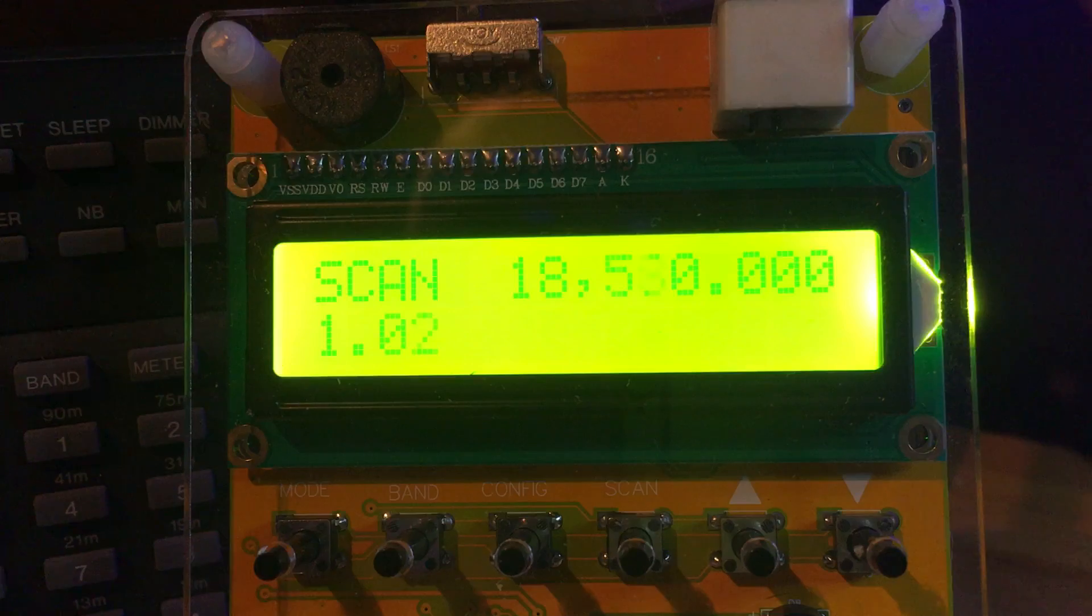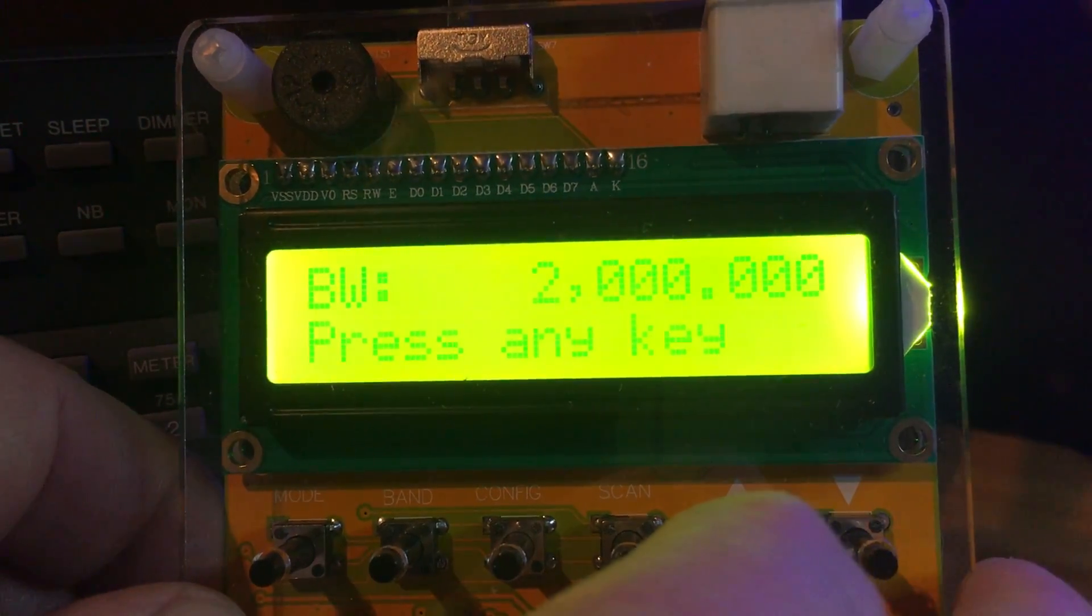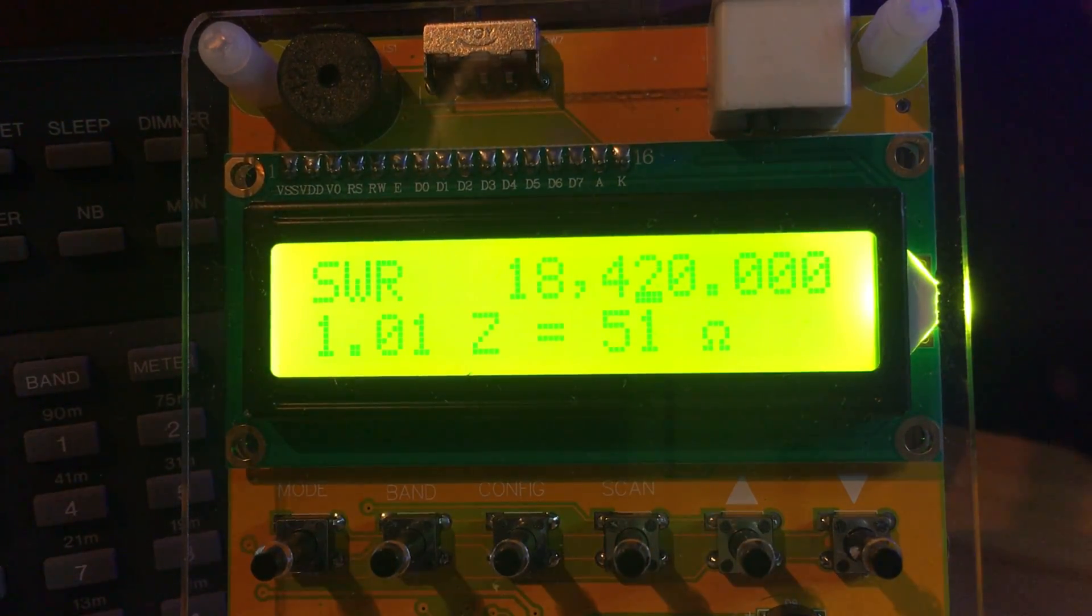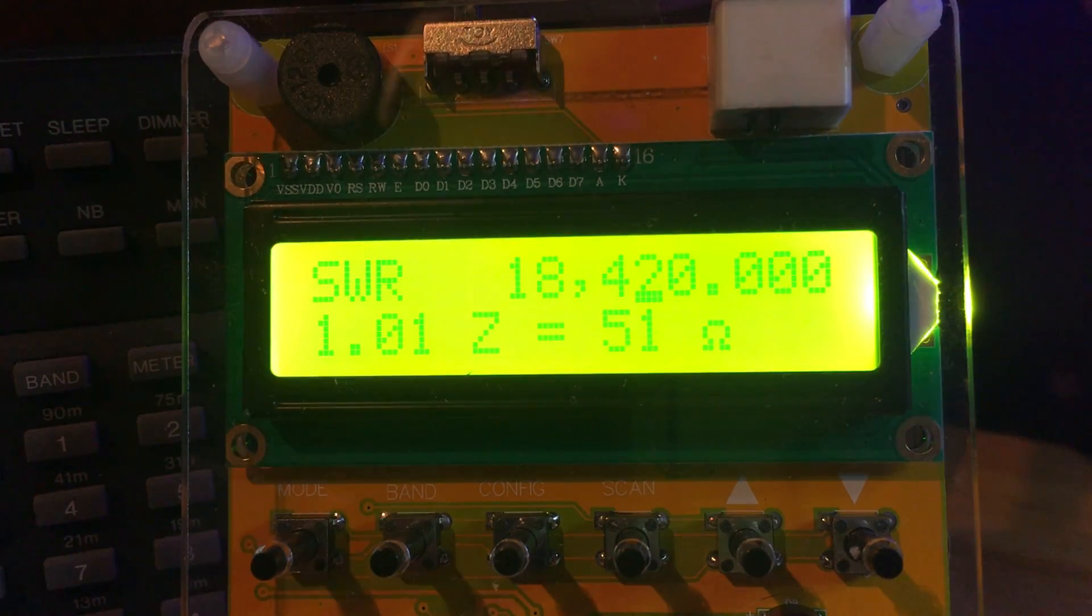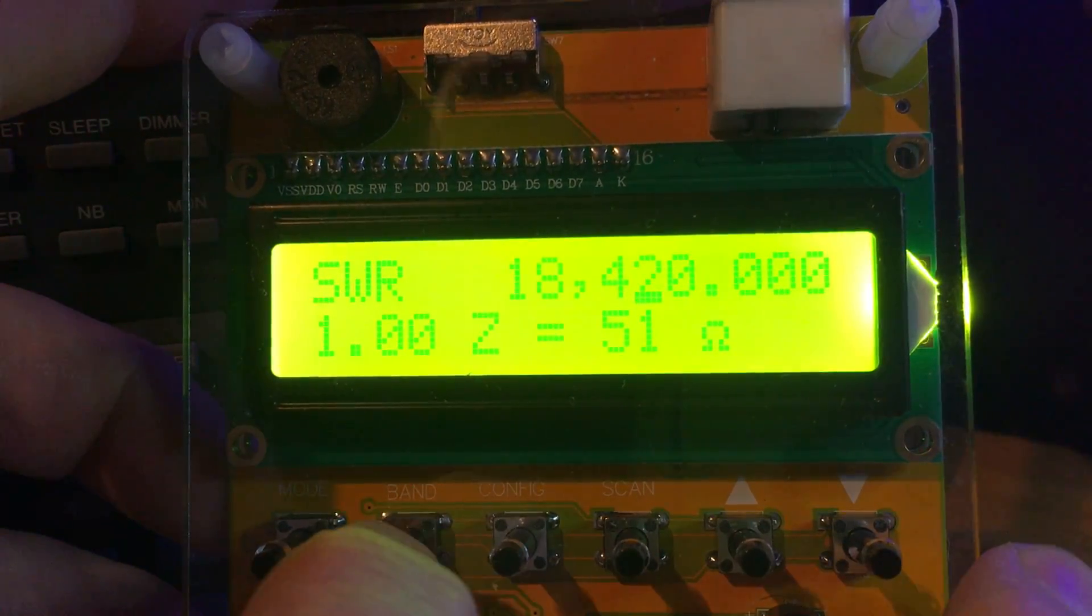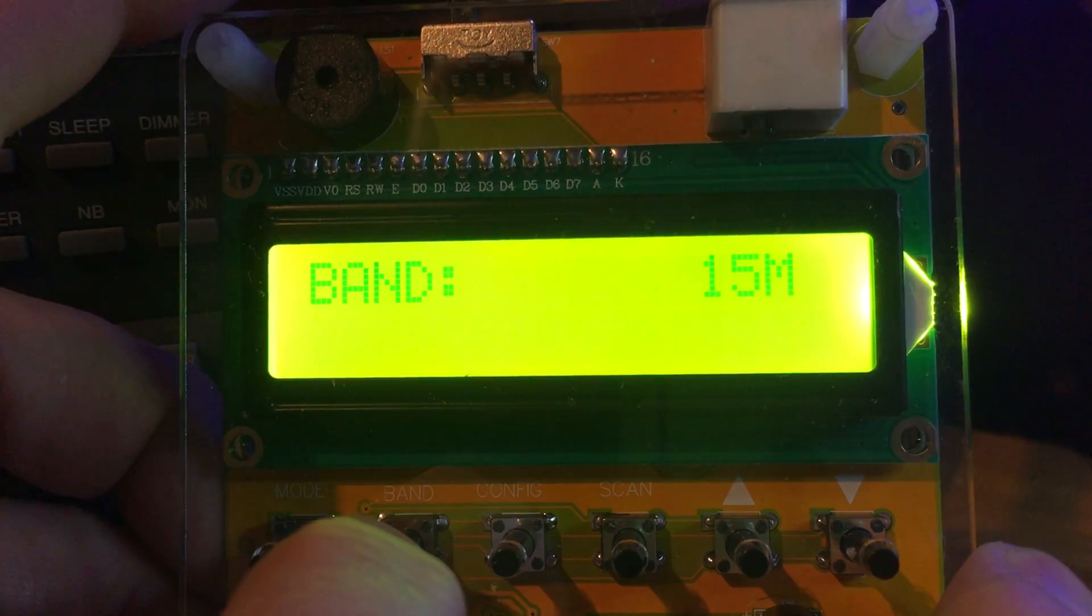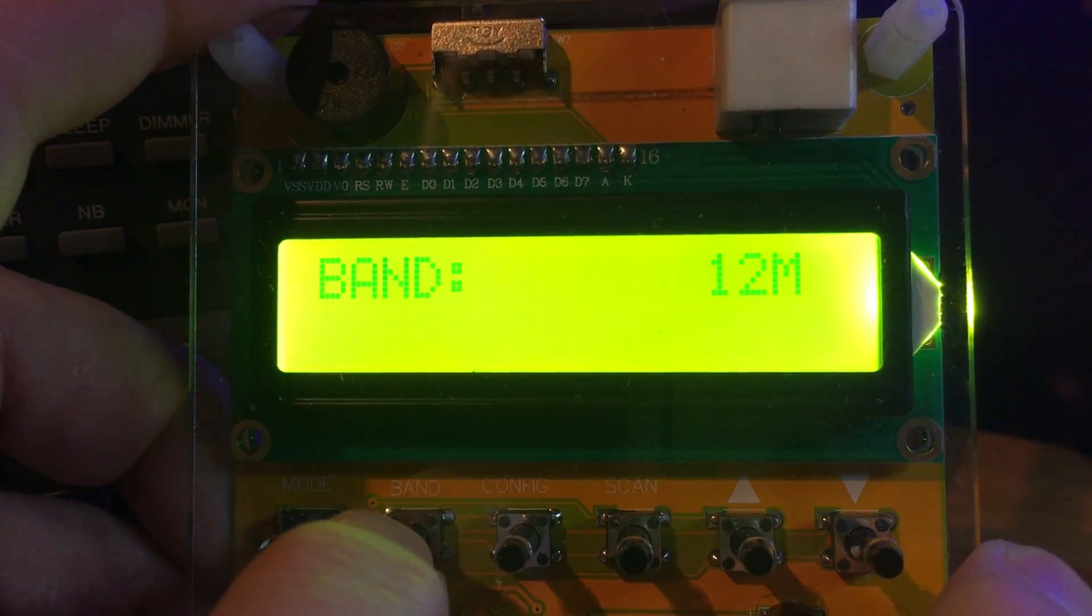Don't forget, the first screen will show you the bandwidth that it's tested, so it's a bandwidth of 2 megahertz for that band. If you press any key again, it will tell you the most resonant frequency for that band is 18.420 at 51 ohms, which again is fantastic.